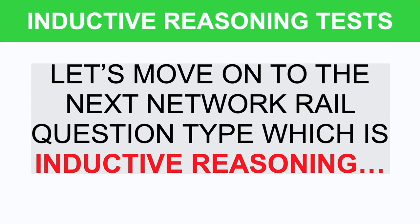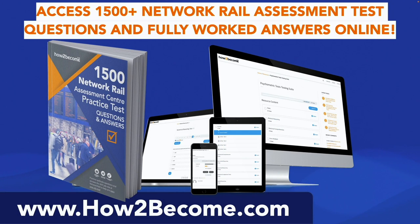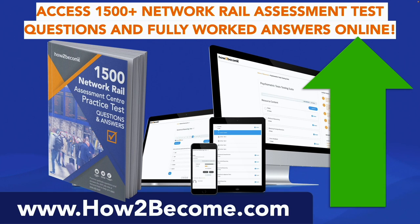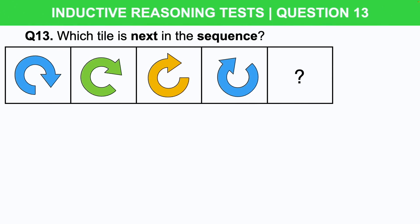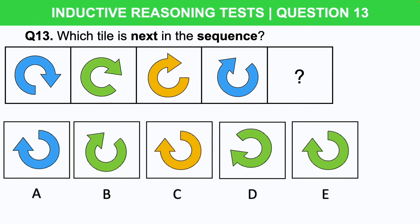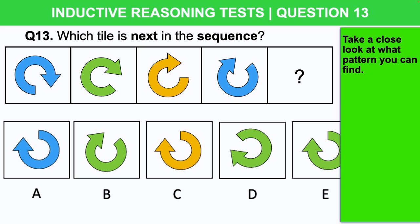Let's move on to the next type of Network Rail question type, which is inductive reasoning. This is an area I get so many requests for advice and tips on. If you'd like to practice any of these question types in mock exam conditions, click the link in the top right-hand corner and head over to howtobecome.com where you can instantly access my 1,500 Network Rail assessment test questions and answers. Let's take a look at a common but tricky Network Rail style inductive reasoning question: which tile is next in the sequence? The question mark is that final piece we need to work out, with answer options a, b, c, d, and e. Take a close look at the pattern — these are all about patterns and identifying them.